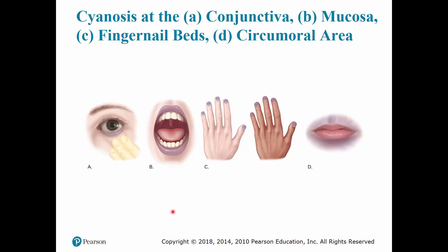For cyanosis, you want to look at the mucous membranes — look at the conjunctiva of the eye, the lips, the nail beds, and even the area around the lips. No matter what a person's ethnicity is, you can still find those signs and symptoms of cyanosis — you just have to make sure you're looking in the right spot.